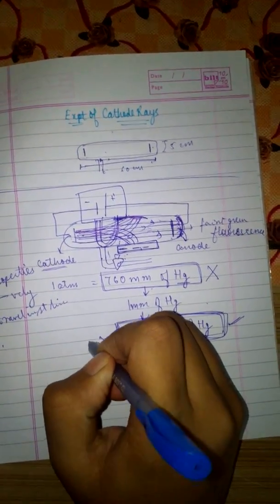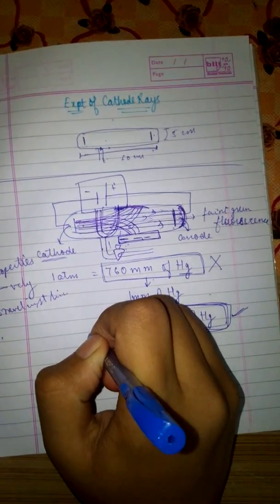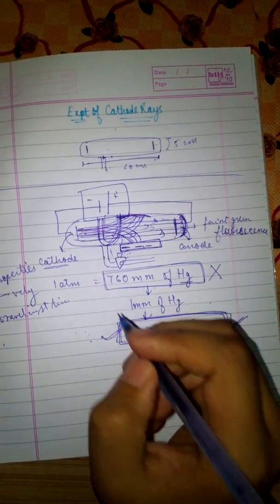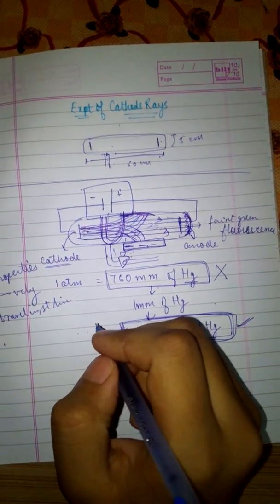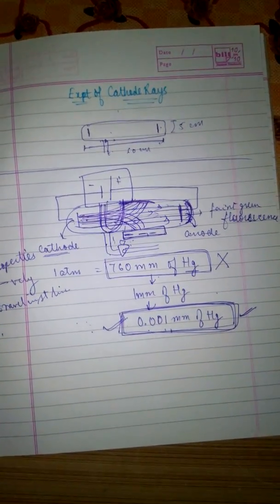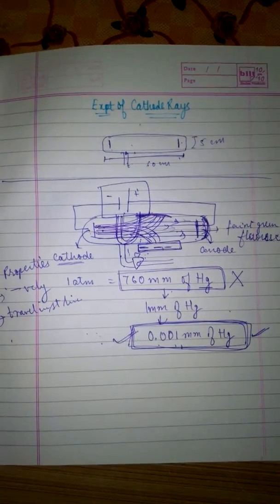Through this, J.J. Thompson had concluded that atoms have some negative particles in them. So thank you, keep watching Learn Easy and stay tuned. Please like and share this video amongst your friends.